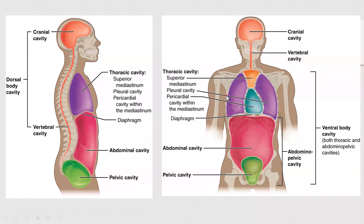Your body also has cavities, and you need cavities to hold your internal organs. Body cavities are spaces that house internal organs. Cavities are divided into dorsal body cavities and ventral body cavities. In the back, you have your cranial cavity and vertebral cavity. The organs inside those cavities are the brain inside the cranial cavity and the spinal cord within the vertebral cavity. Ventral body cavities are divided into thoracic cavity and abdominal pelvic cavity.